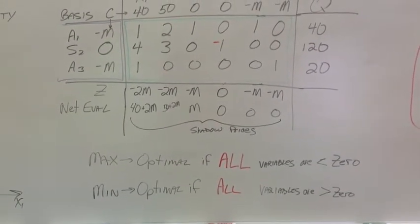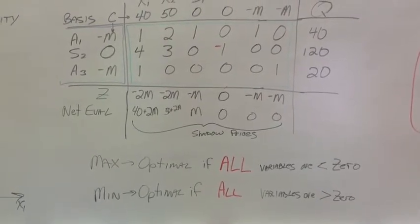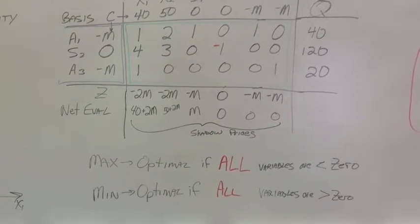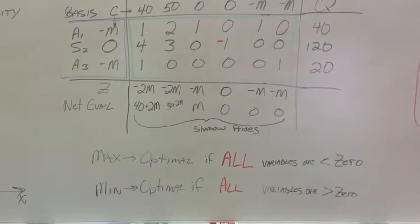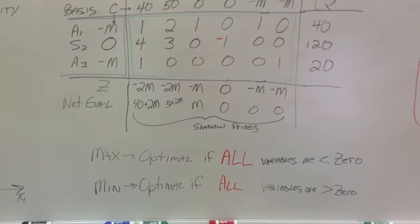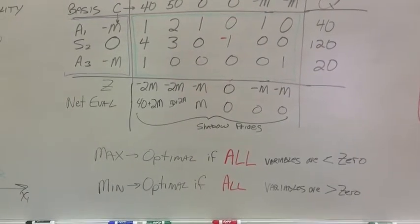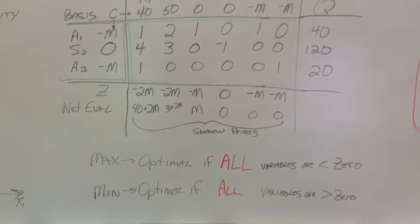So if it's a maximization problem like this is, it's optimal if all the variables are less than zero. In other words, optimal maximization of profit occurs when we can't squeak any more money out of any one of the variables. So they all have to be less than zero.